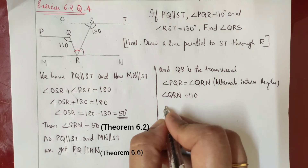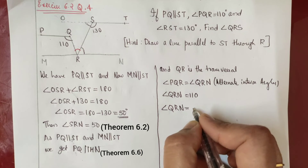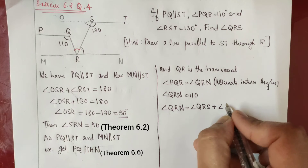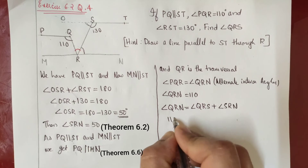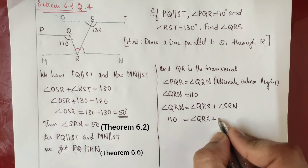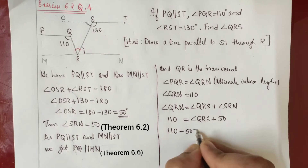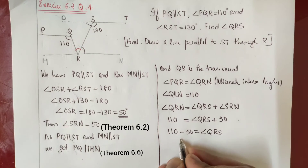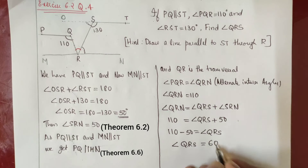We get angle QRN is equal to angle QRS plus angle SRN. We have to find angle QRS. We got angle QRN equal to 110 degrees and angle SRN equal to 50 degrees. So angle QRS equals 110 minus 50, which gives angle QRS equal to 60 degrees.